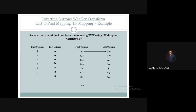Now, the last column here is A30. Which row does this map to in the first column? The first column has A30 as well — the first occurrence of A. So A30 in the last column maps to A30 in the first column. We go to that row. The last column of that row gives us the next character to prepend to our reconstructed text, which is N10.